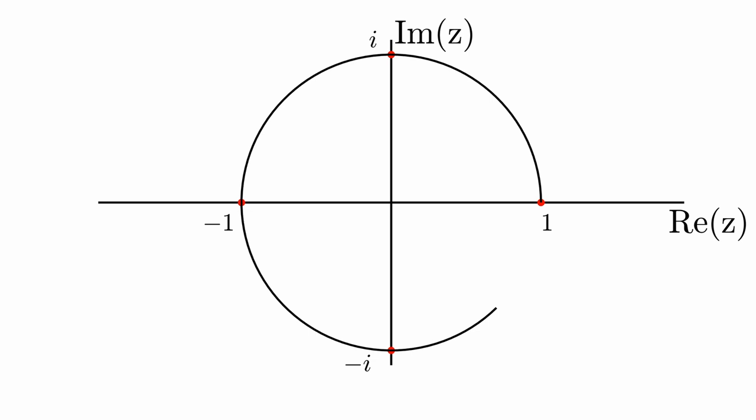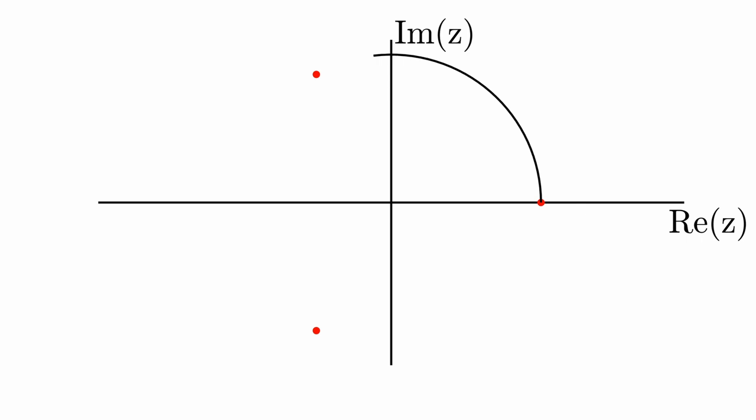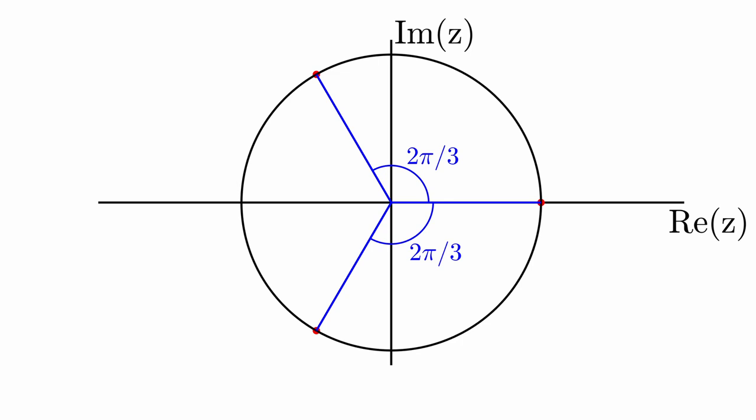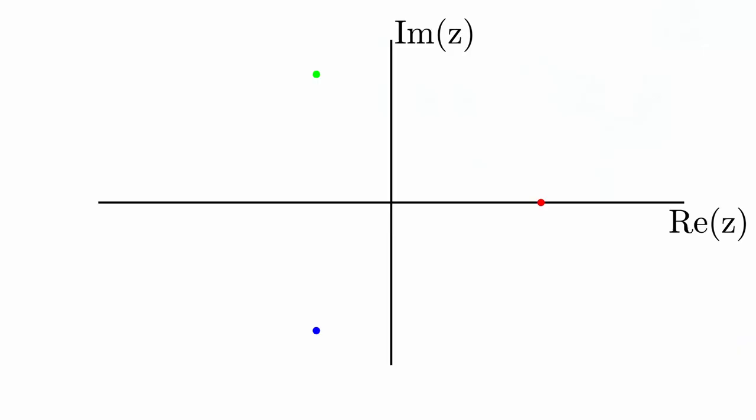The three cube roots of unity are also evenly distributed on the unit circle and make an angle of 2π/3 with the positive real axis. Some simple trigonometry gives us the three roots: r₁ = 1, r₂ = −1/2 + i√3/2, and r₃ = −1/2 − i√3/2.